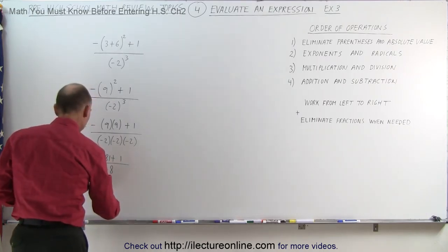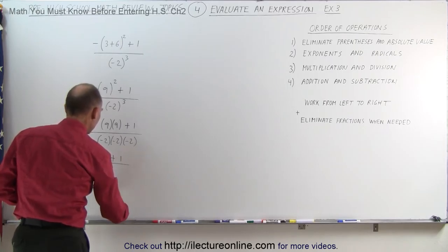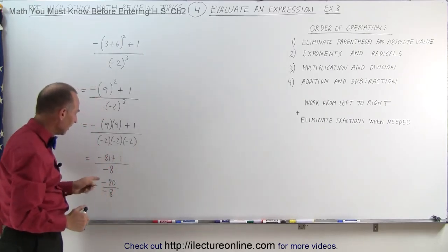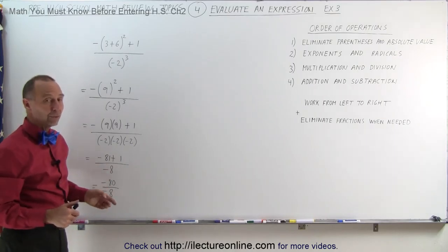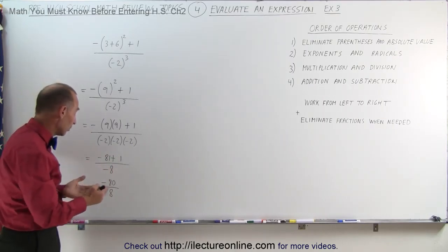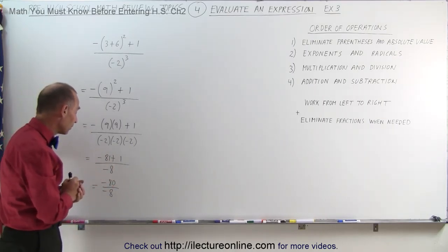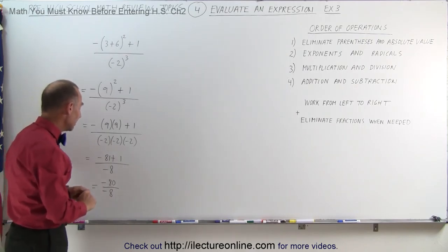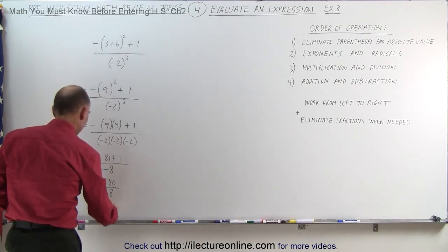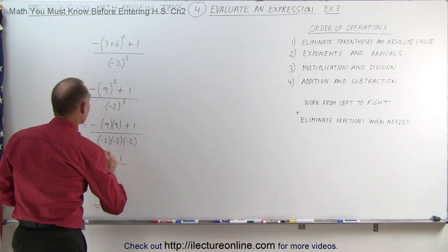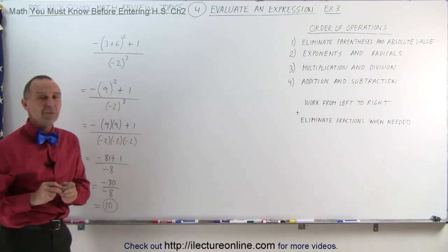Combining the numerator, this is equal to minus 81 plus 1 which is minus 80 divided by minus 8. So here we are dividing a negative number by a negative number. Again that's an even number of negative numbers so the negatives cancel out. And 80 divided by 8 is 10, so the answer here is 10. The original expression equals the number 10. And that's how it's done.